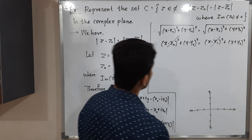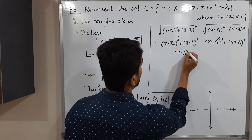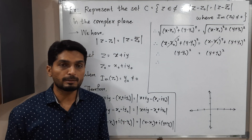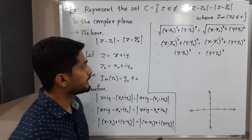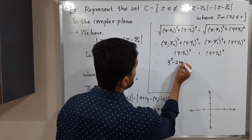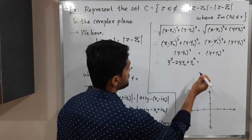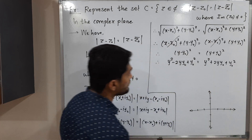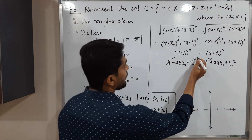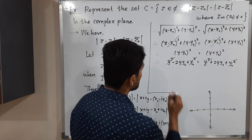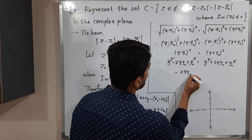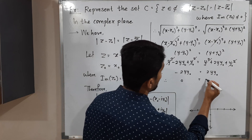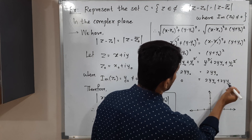After cancellation, we have (y - y₀)² = (y + y₀)². Expanding both sides: y² - 2yy₀ + y₀² = y² + 2yy₀ + y₀². The y² terms cancel from both sides, and the y₀² terms cancel from both sides. The remaining equation is -2yy₀ = 2yy₀, which gives 0 = 4yy₀.